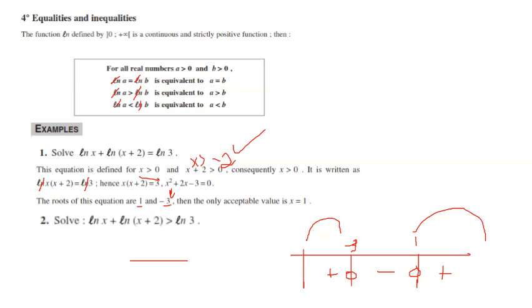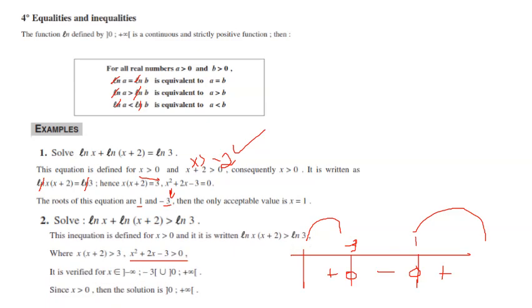Another example: ln(x) + ln(x + 2) > ln(3). Take the same conditions. You get the same expression x² + 2x − 3 > 0, with roots −3 and 1. Using a sign table, the expression is positive for x in (−∞, −3) ∪ (1, +∞). Combined with the condition x > 0, the solution is x > 1, giving (1, +∞).